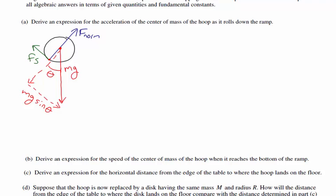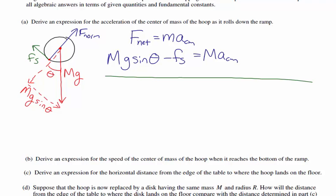Now I'm going to apply Newton's second law to this object. The net force equals the mass times the acceleration of the center of mass. Making down the ramp positive, the net force is the parallel component of weight down the ramp minus the force of static friction acting up the ramp: MG sine theta minus the force of static friction equals M times the acceleration.